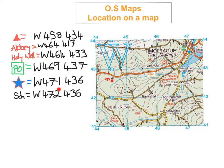In your Junior Certificate examination, being out by 1 is acceptable. So if you had 473 instead of 472, they will still accept that — 1 out is OK. Or if you had 437 instead of 436, they will accept that. You're allowed to be out by 1 in the six-figure, as long as it's the last digit of both the easting and northing.